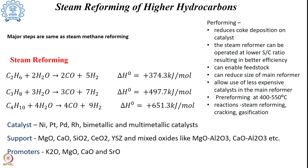It can also enable a variety of feedstocks to be used for the reforming process. By the use of a pre-reformer prior to the primary reformer, since the higher hydrocarbons are being reduced, the temperature of the process can also be reduced, and as such less expensive catalysts can be used in the main reformer.